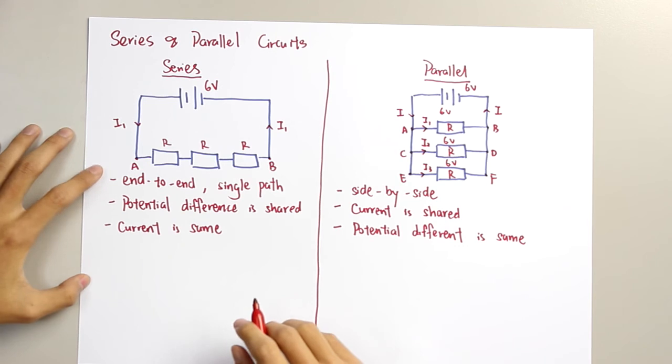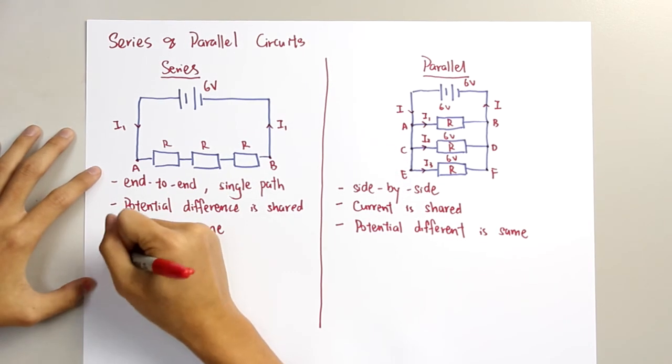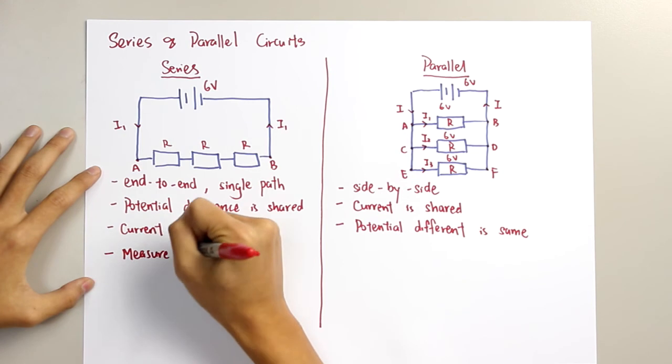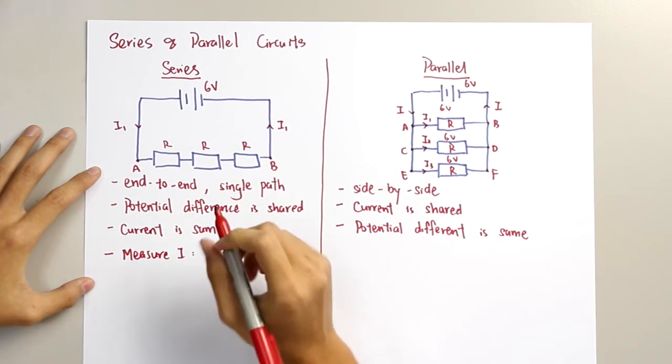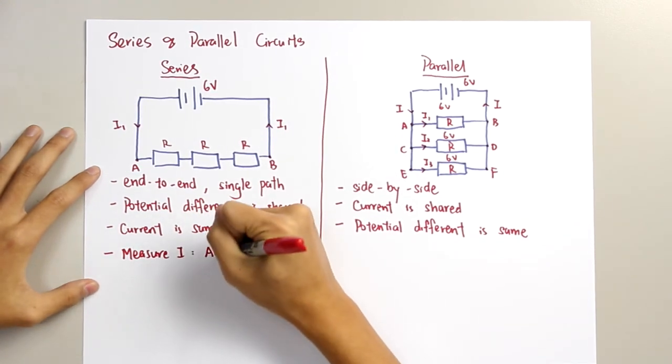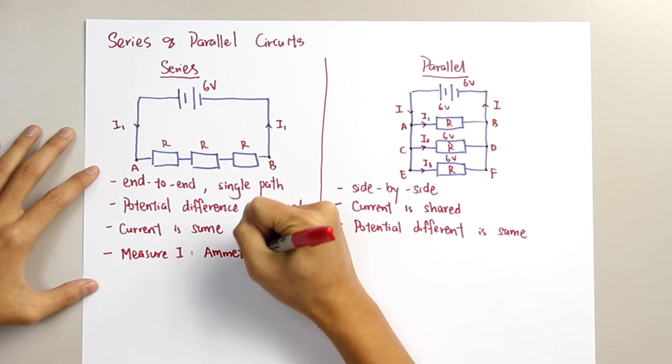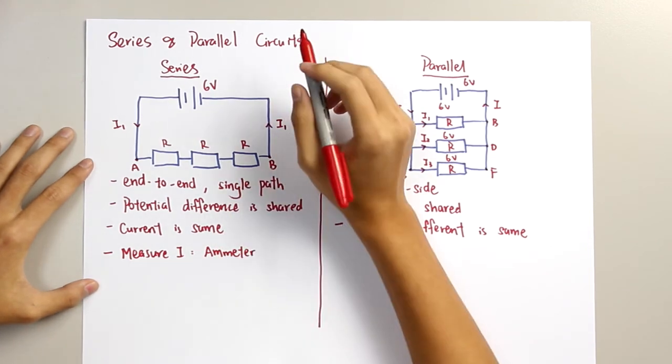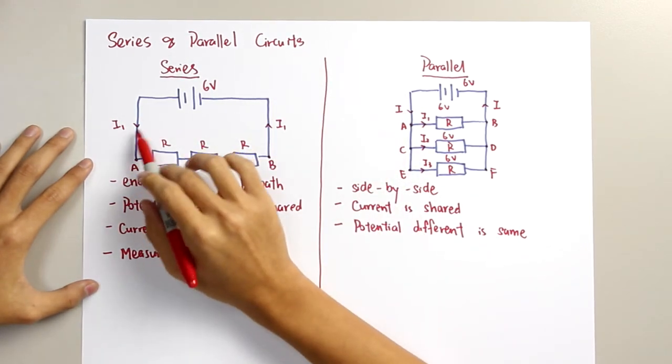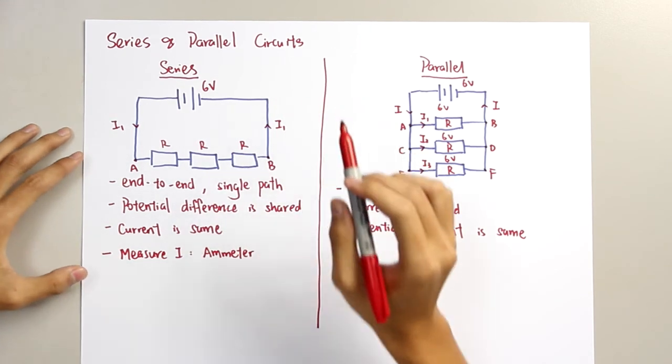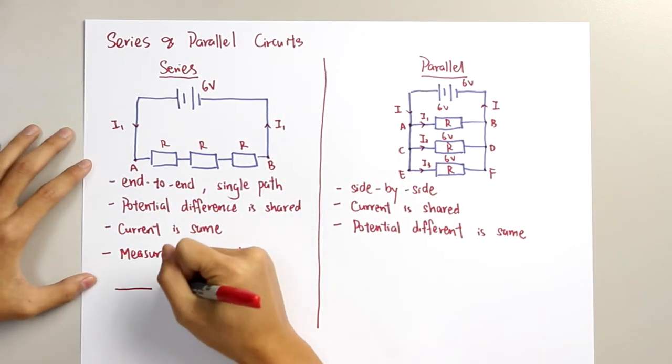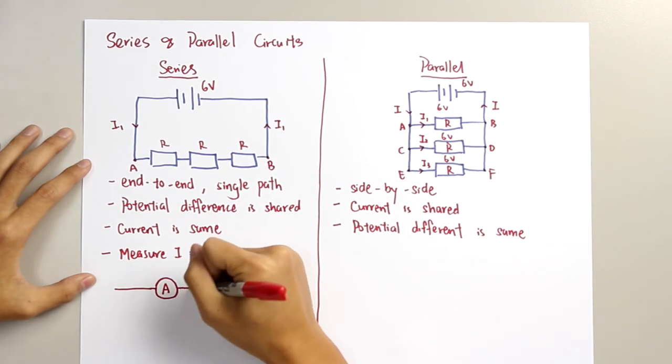Before this, we have learned that when you measure the current, you use an apparatus that's called ammeter. And for ammeter, we measure the current of the circuit, that's why it should be connected in series.